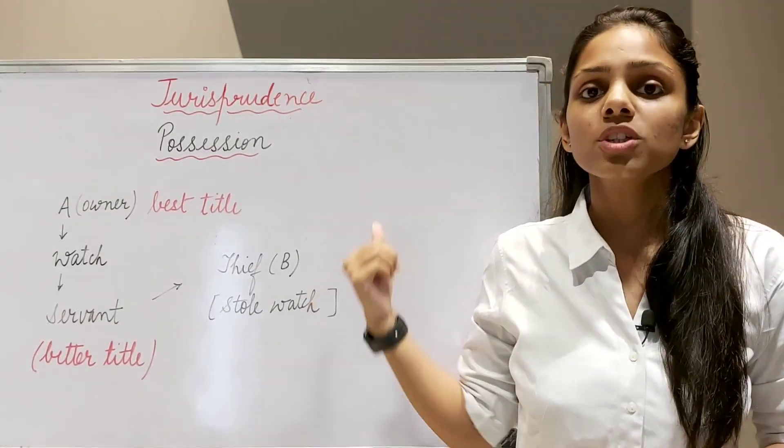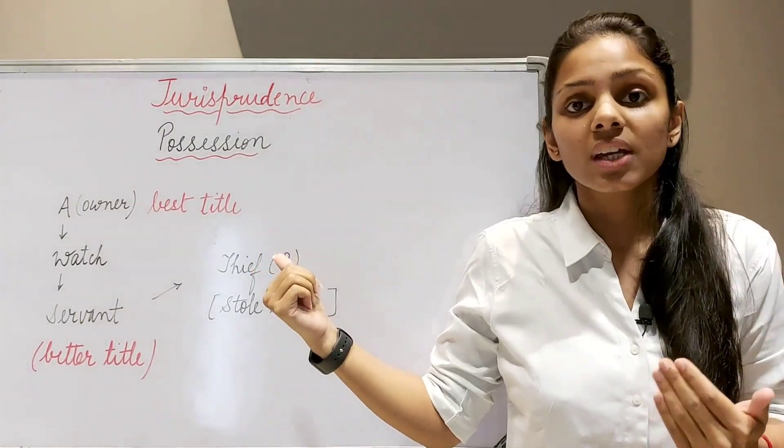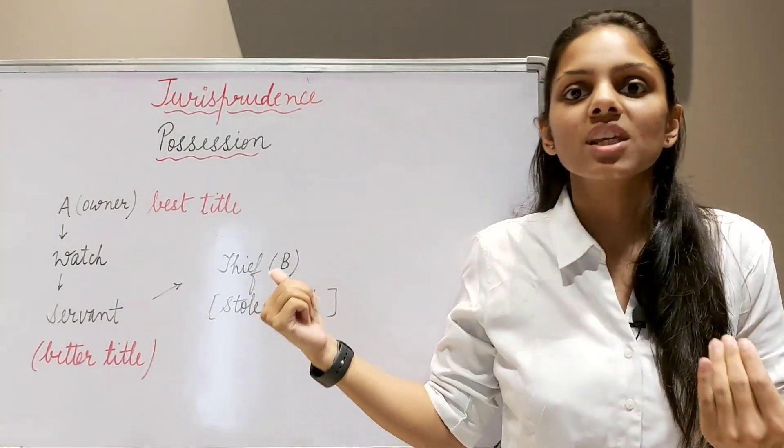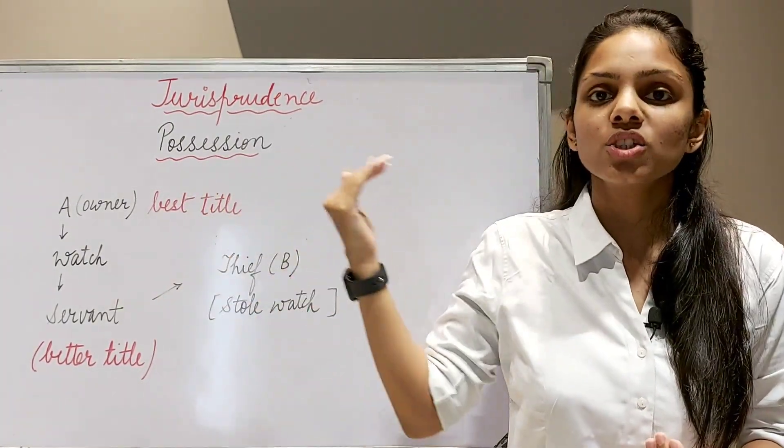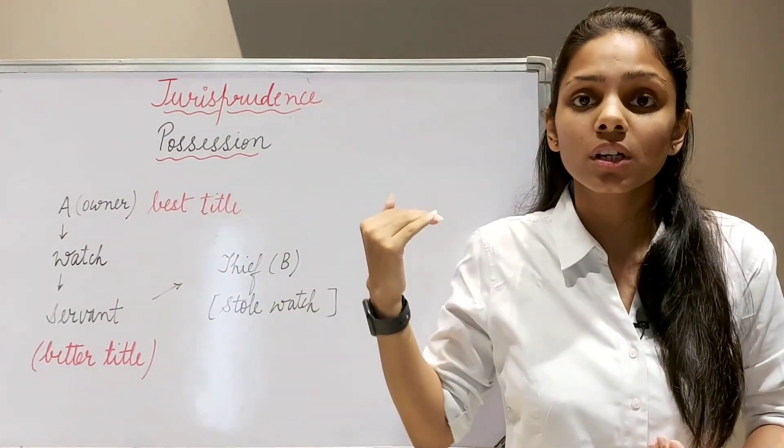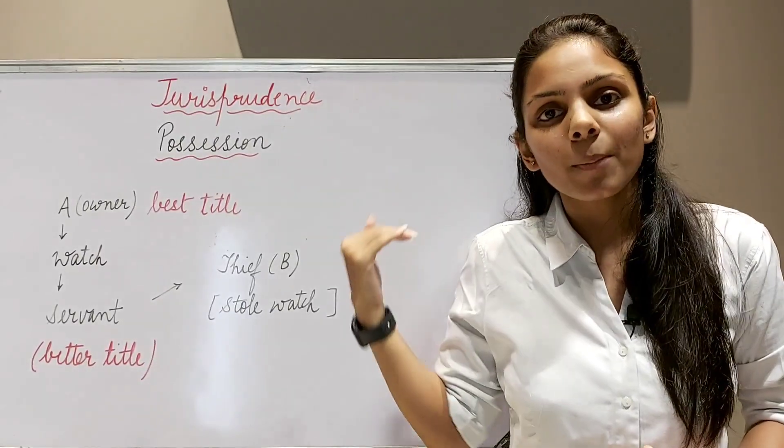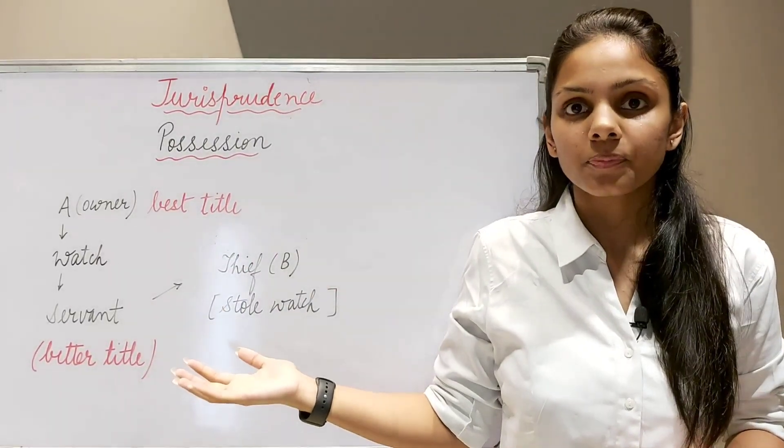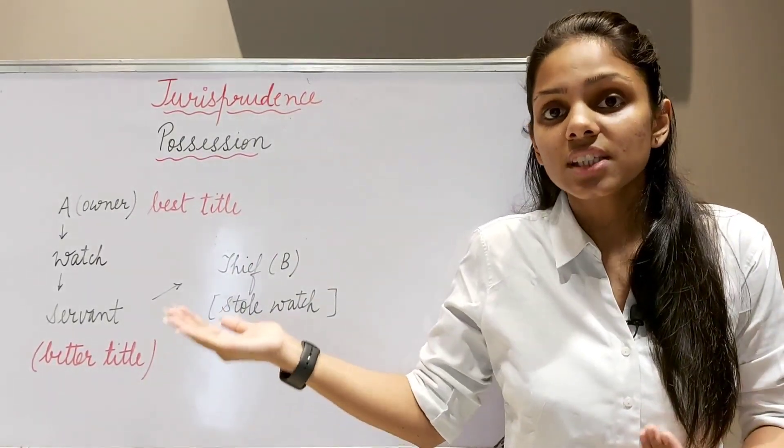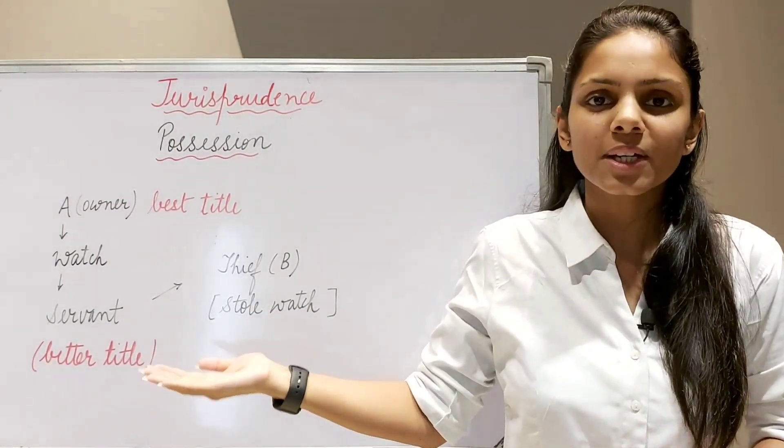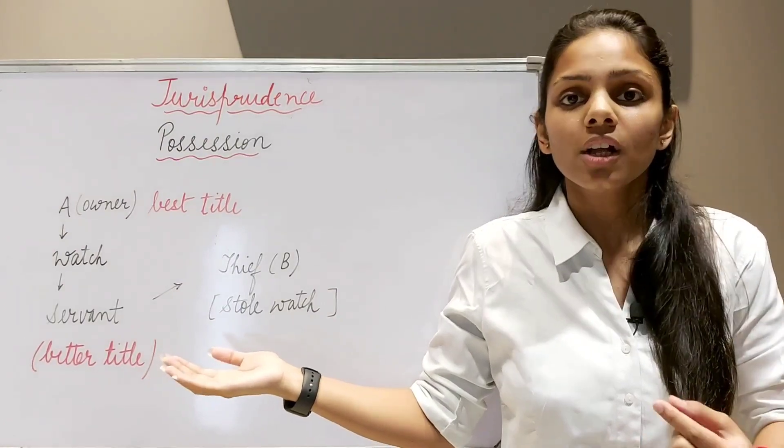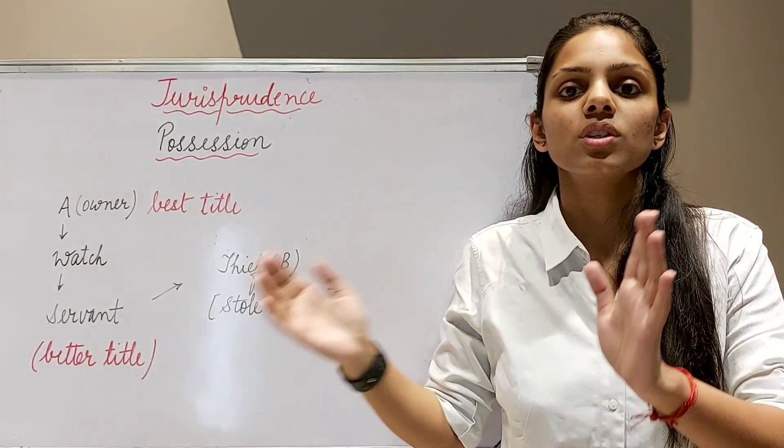That's why it is said that possession is a prima facie evidence of ownership. Prima facie means on the face of it. On the face of it, it appears that the person who has possession is also the owner. For example, if this board is in my possession, it is deemed, it is presumed that I am also the owner. It is prima facie evidence on the face of it. If this thing is in my physical control or custody, then we presume that this board is mine.